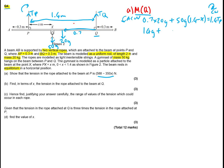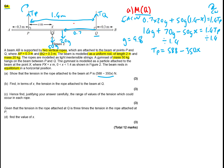Working that out gives us 14g plus 1.4 times 50g, which is 70g, minus 50gx equals 1.4 Tp. Divide by 1.4 and substitute g equals 9.8, and you get Tp equals 588 minus 350x. That line gets you the method mark and answer mark — a straightforward three out of three marks.